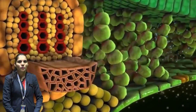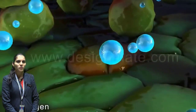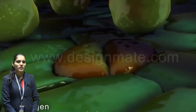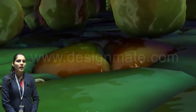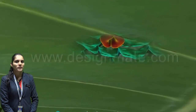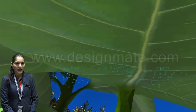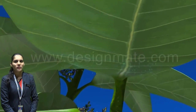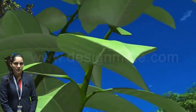Today we learned about the amazing process of photosynthesis. Photosynthesis is the process in which green plants make their own food in the presence of sunlight and chlorophyll pigment. Thank you.